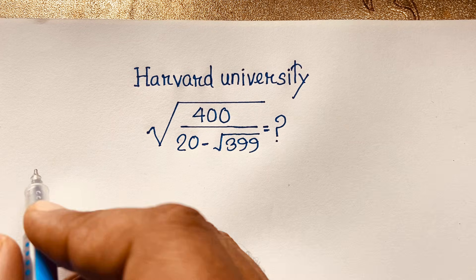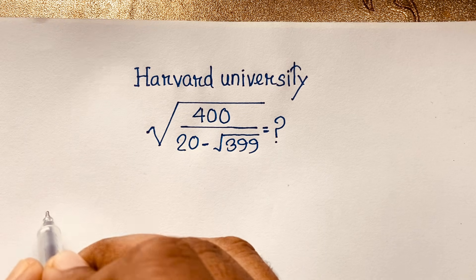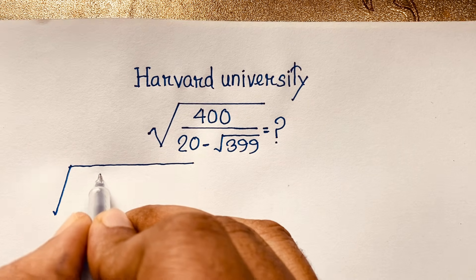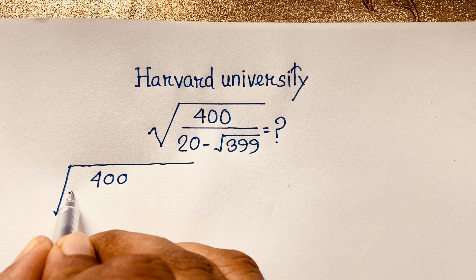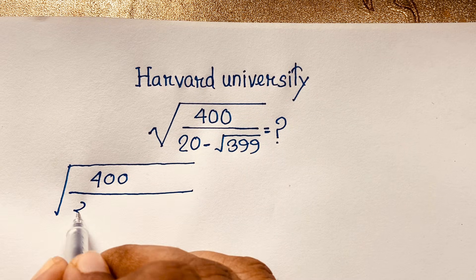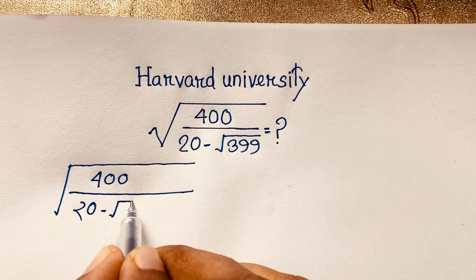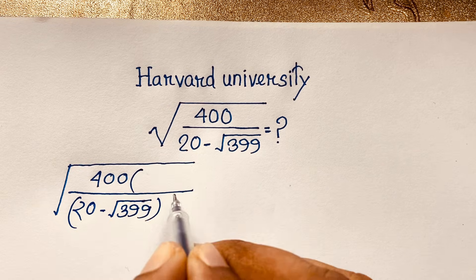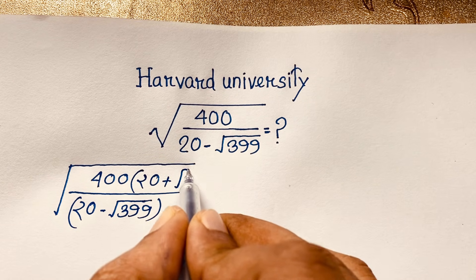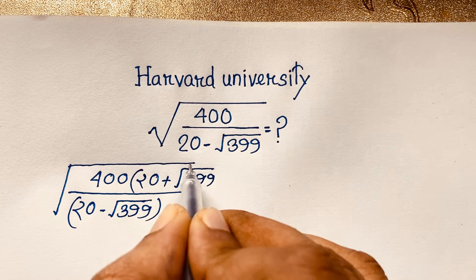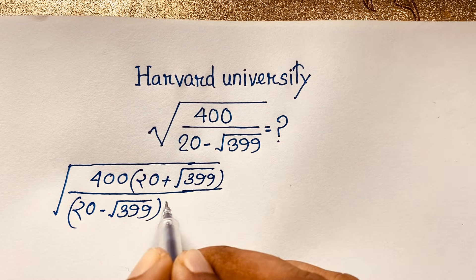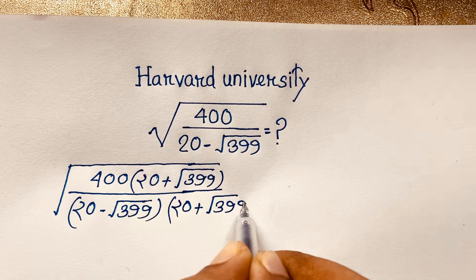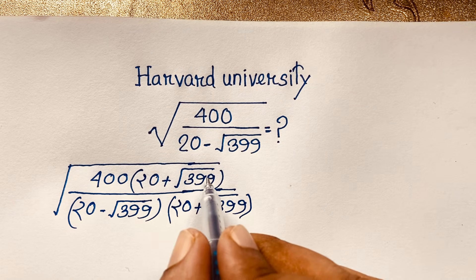First of all, you can see here square root of 400 over 20 minus square root of 399. I multiply the denominator by 20 plus square root of 399, and I also multiply the top by 20 plus square root of 399. Now this will cancel out — let's find out the key in the next line.